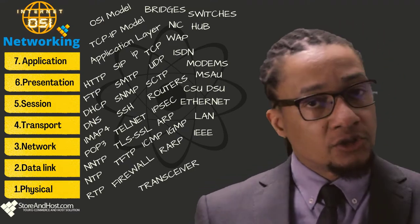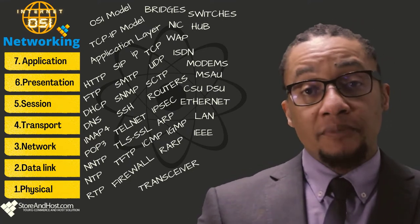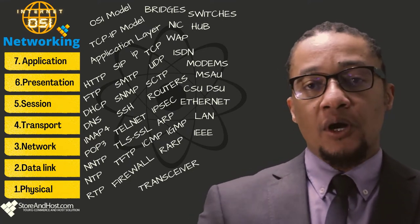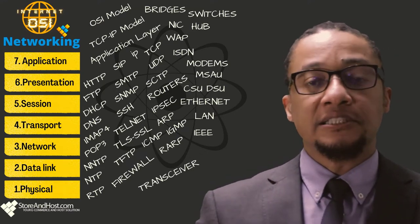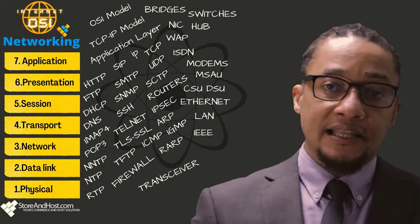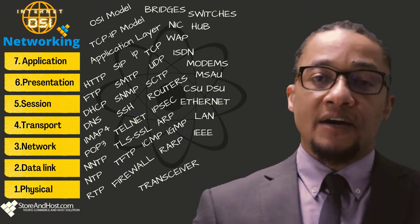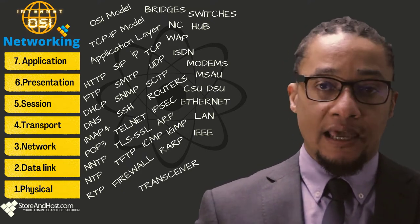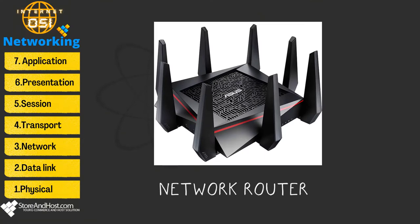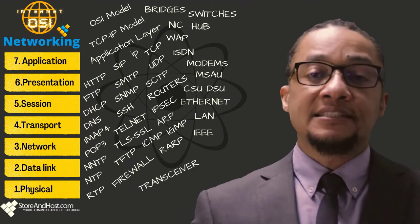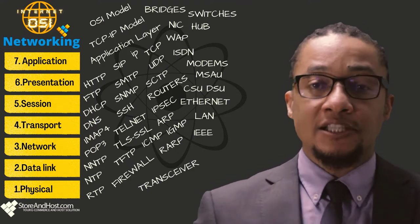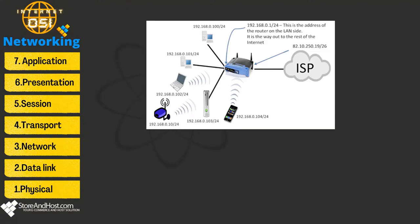The data link layer uses a network switch to take a stream of bits from the physical layer and pass them to the upper layers. It converts raw bits into data frames, performs error detection and correction, and transmits each frame separately to the network layer. The network layer uses a router to convert frames received from the data link layer into packets. This layer is responsible for assigning logical IP addresses to devices.